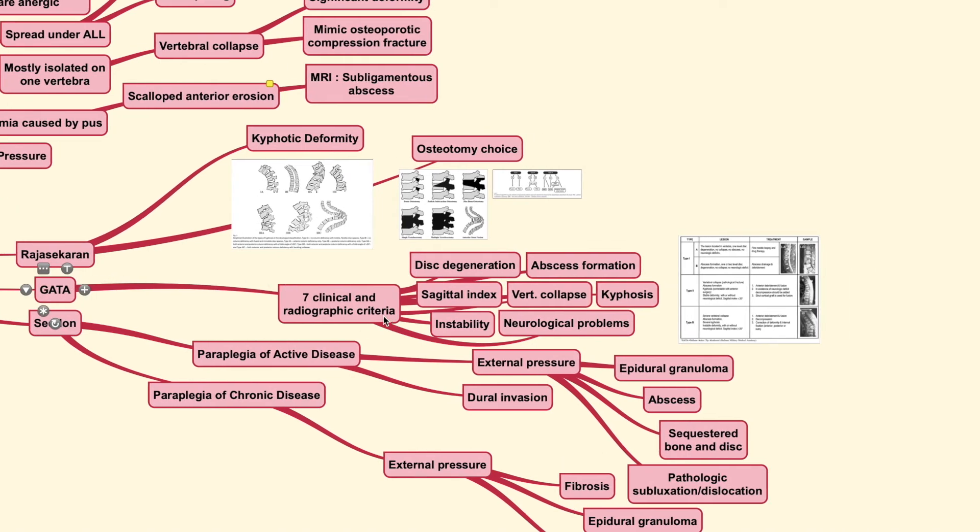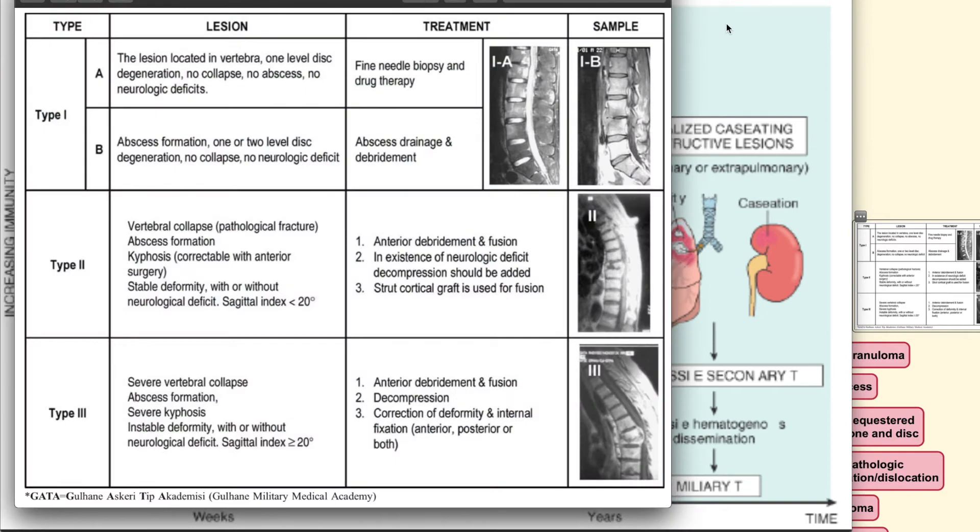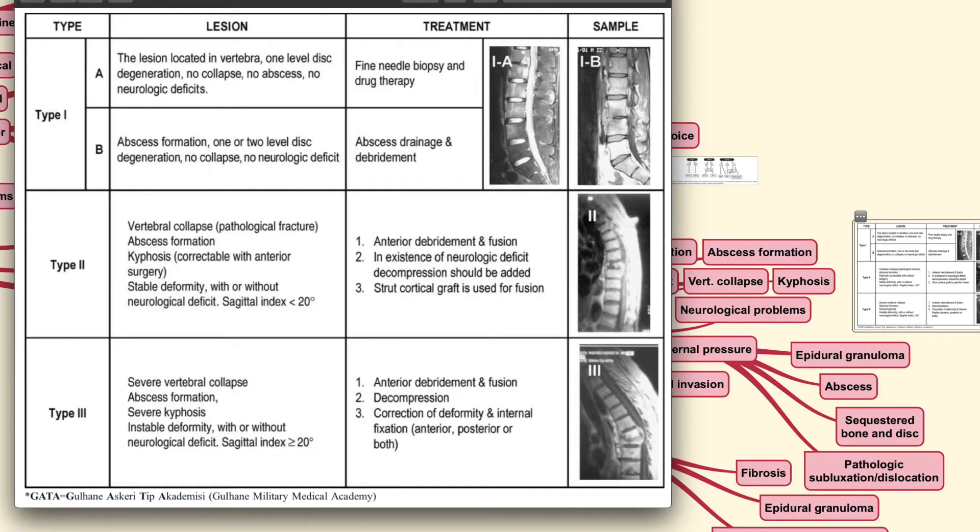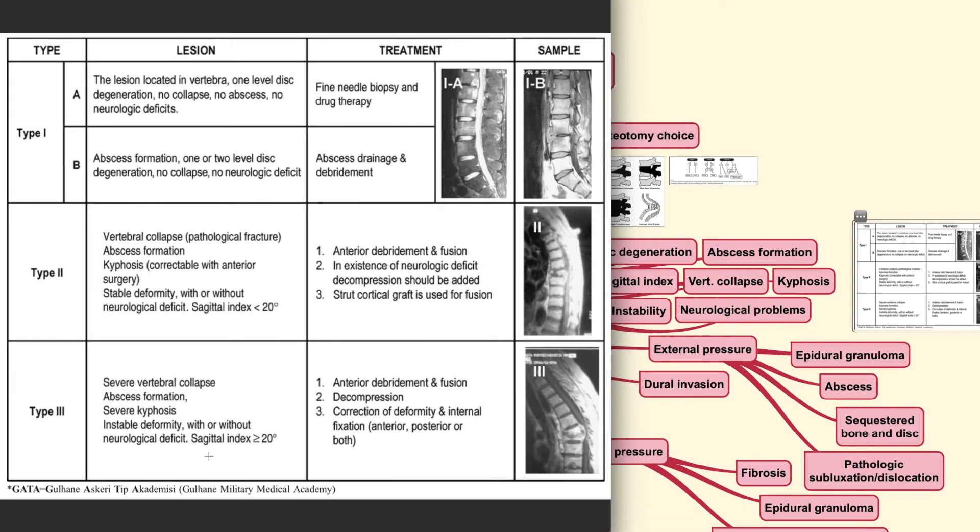Now, the other classification scheme that is commonly known is those by the GATA, which classify the condition based on seven different clinical and radiographic criteria. I'm going to show you this table here. I'm going to close this. OK, so this classification by GATA or the Gulhane Military Medical Academy, sorry.